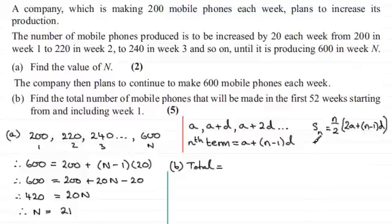Or, this is the one I would prefer for this example, Sn equals n over 2 multiplied by the first term plus the last term.